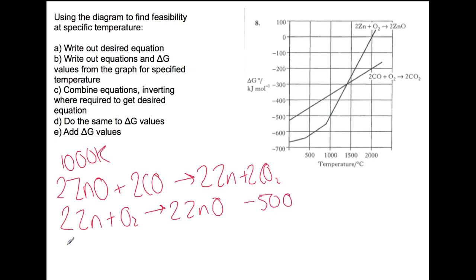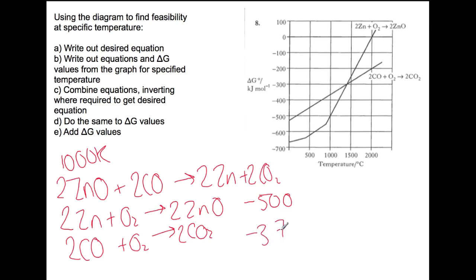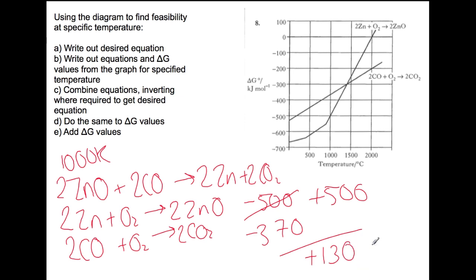We're going to do the same for the other equation: two moles of carbon monoxide plus oxygen to give two moles of carbon dioxide. At 1000 degrees, the value for the carbon monoxide reaction is around minus 370. We need to flip over the top reaction to allow us to combine the two reactions to get the desired equation. That means we're going to do the same to the delta G value, so this will now be plus 500. If we add these two values together, we get an overall delta G value of plus 130 kilojoules per mole. This means that at 1000 degrees, the reaction would not be feasible.